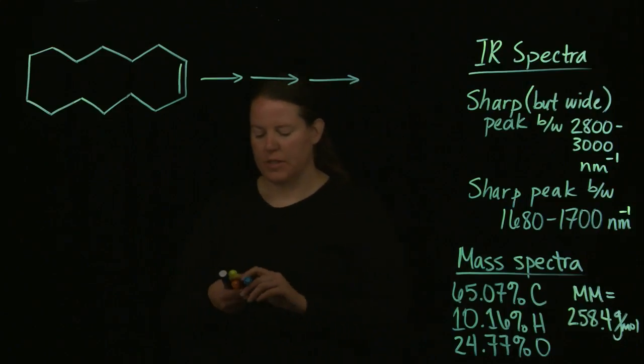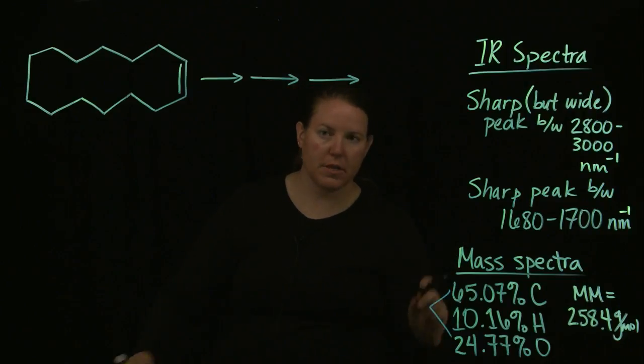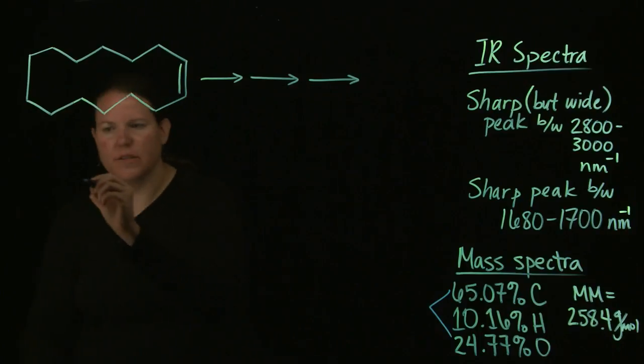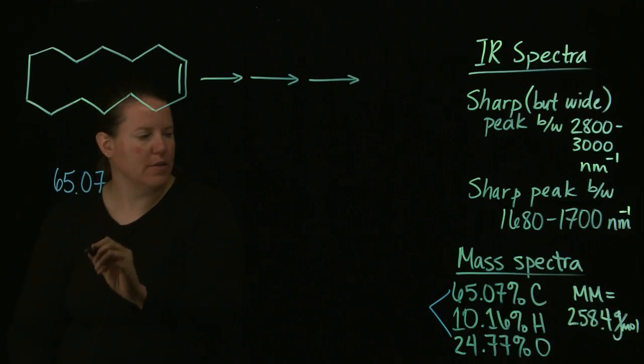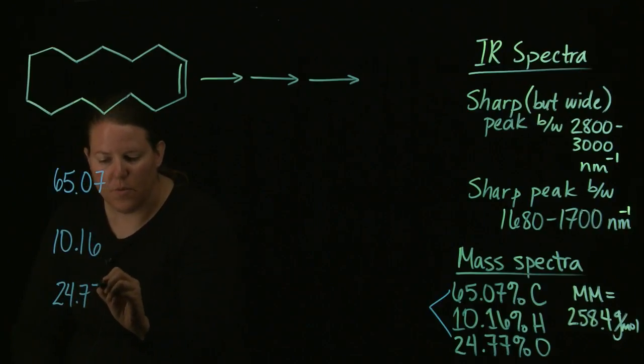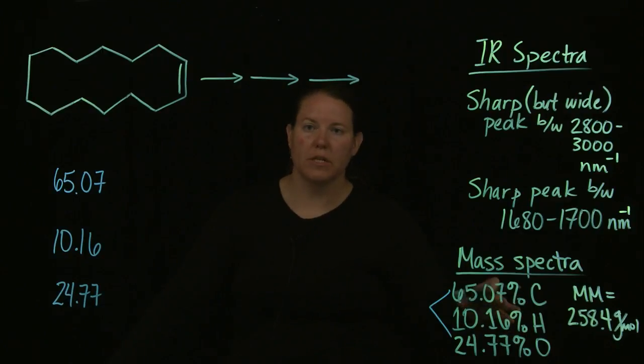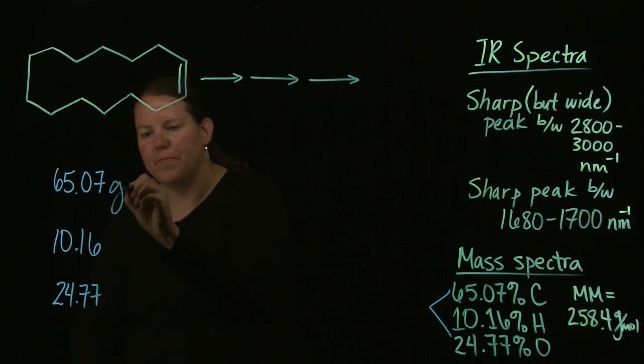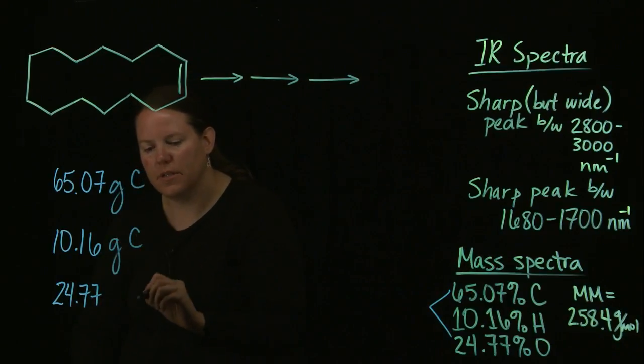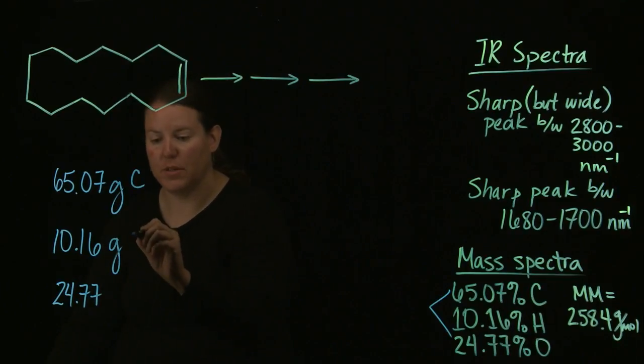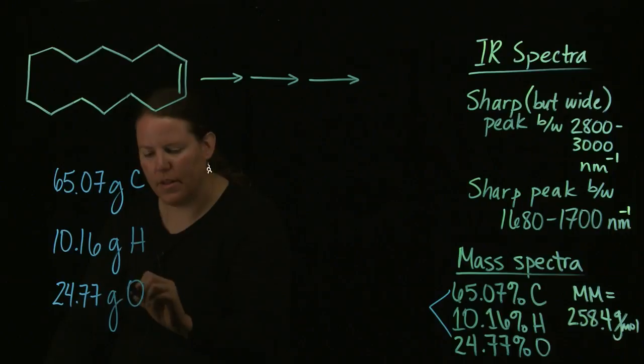Let's start off with the mass spectra because that's where we need to begin. What we're going to do here is we're going to take those percentages and calculate the empirical formula. It's like kicking it old school, like general chemistry one. Alright, so let's do that. Here we go. 65.07, 10.16, and 24.77.